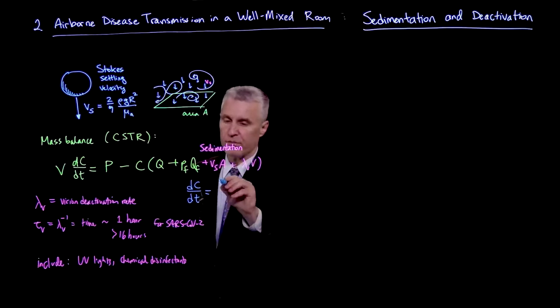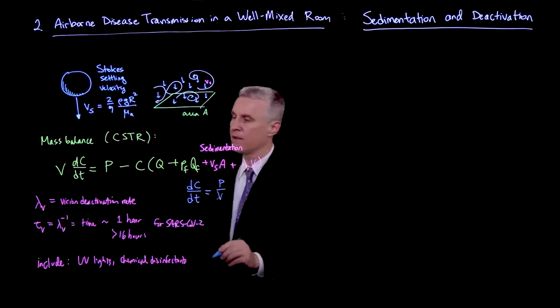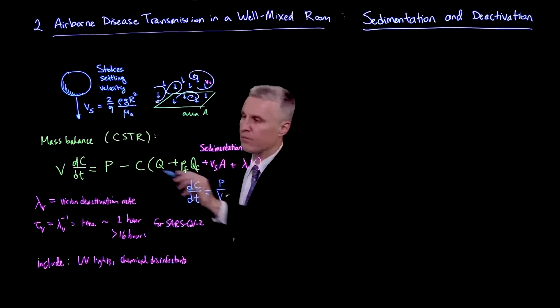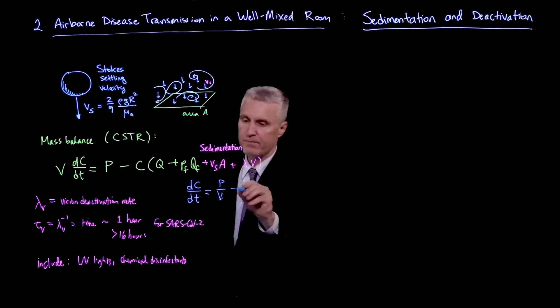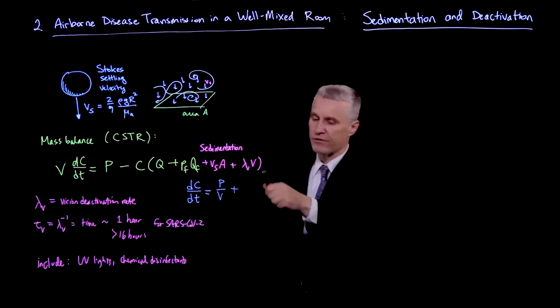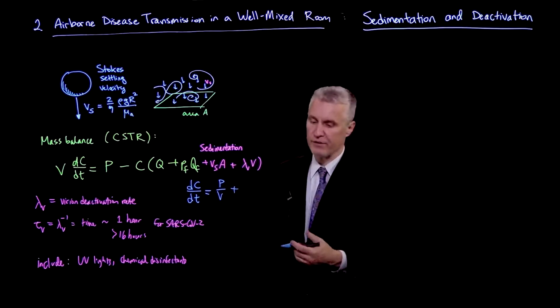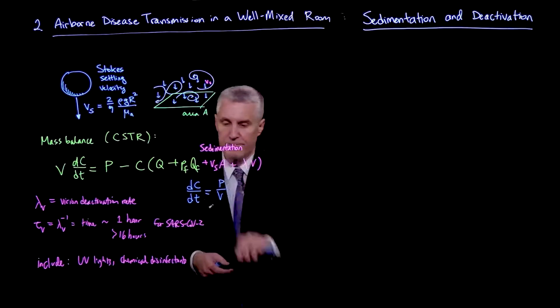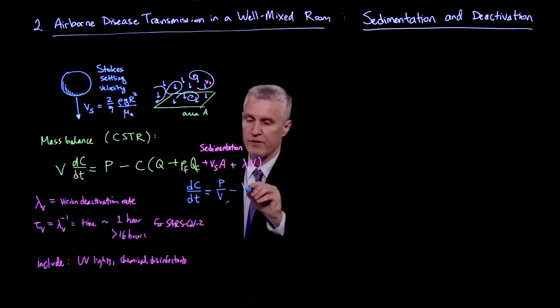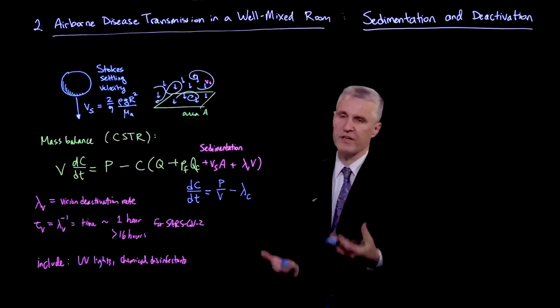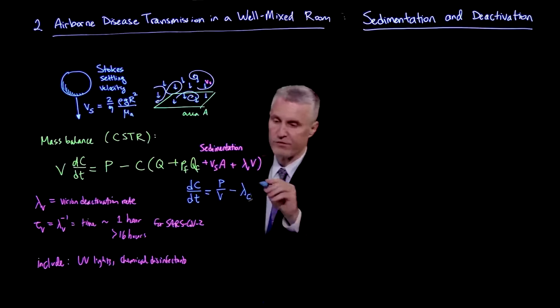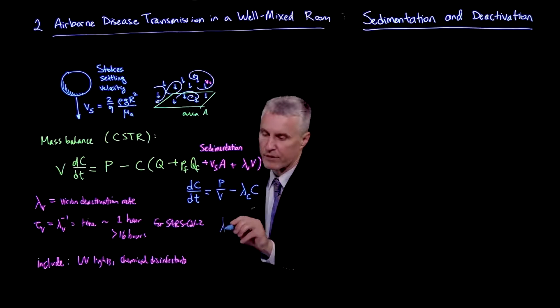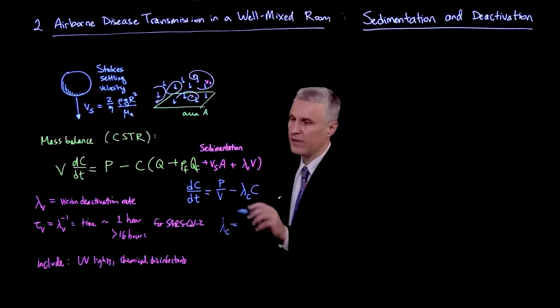And so let me write this equation again after such a division. That would be dC/dt equals P over V. But then we have Q over V is our lambda. But notice, all these things are essentially giving us a correction to lambda, the relaxation time. So we get minus lambda_C, just for the relaxation rate of the concentration field.